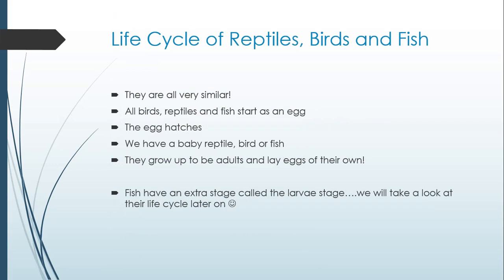They all start as an egg. The egg hatches, and then we have a baby reptile, bird, or fish. Then they grow up to be adults and lay eggs of their own. Fish have an extra stage called the larva stage, and we will take a look at their life cycle later in the video. The most important thing to take away is that reptiles, birds, and fish mostly all start as an egg.